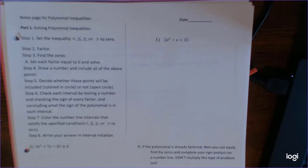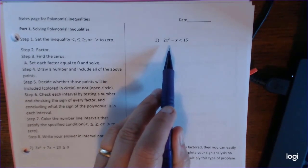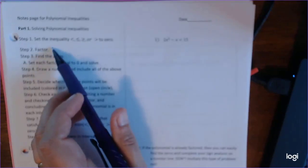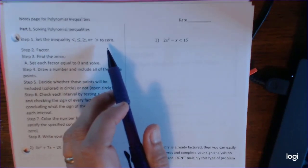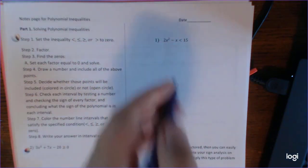This lesson is on polynomial inequalities. The steps are going to feel the same as quadratic inequalities because a quadratic is a polynomial. We'll start with a quadratic, and step one is to set the inequality to zero — don't forget to write the inequality that matters.